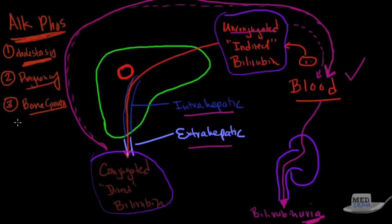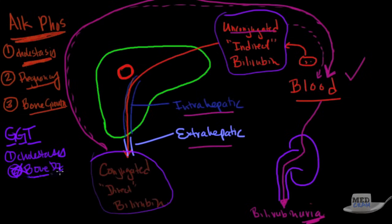So because of that uncertainty, there's another test called a GGT, or otherwise known as gamma glutamyl transferase. Now this is pretty good because you do see an increase in GGT in cholestasis, but you don't see it in bone disease. You do not see it in bone disease, just cholestasis.